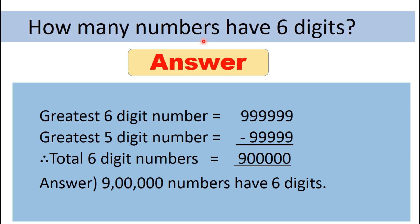We now go to the next question: how many numbers have 6 digits? In order to solve this, we first find out the greatest 6-digit number, which is 9,99,999. Next we find out the greatest 5-digit number, which is 99,999. After this, we simply subtract the greatest 5-digit number from the greatest 6-digit number. The answer we get after subtracting is 9,00,000. So the final answer is 9,00,000 numbers have 6 digits.